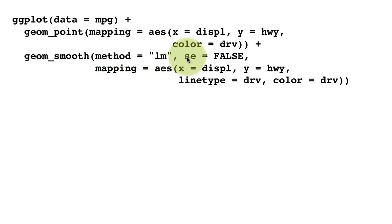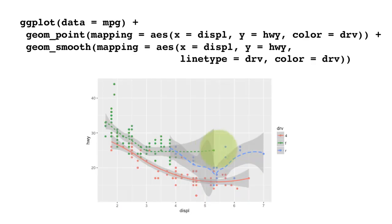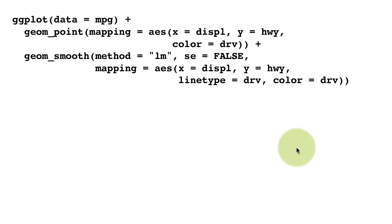And here I'm also demonstrating one other argument you can pass to it, and that is se equals false. If you remember, in the previous example, we saw that around every smooth line is a gray area or a colored area, which tells you what the 95% confidence interval for the smooth value at that particular point is. Now, we may not want that. So when you don't want it, you just say se equals false.